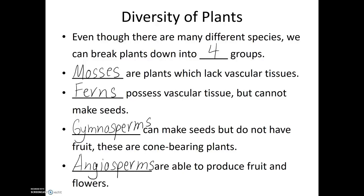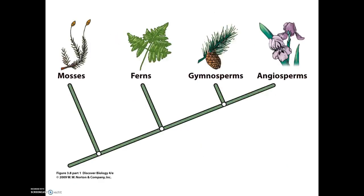Angiosperms are the plants we're often familiar with whenever we think about flowers or fruits, whether it's a rosebush, a tomato plant, or an orange tree. All of these plants which produce both fruits and flowers are angiosperms. Here we see a breakdown of the relationship between these four groups of plants, and I would like to add to this diagram the key adaptations that separate one group from another.